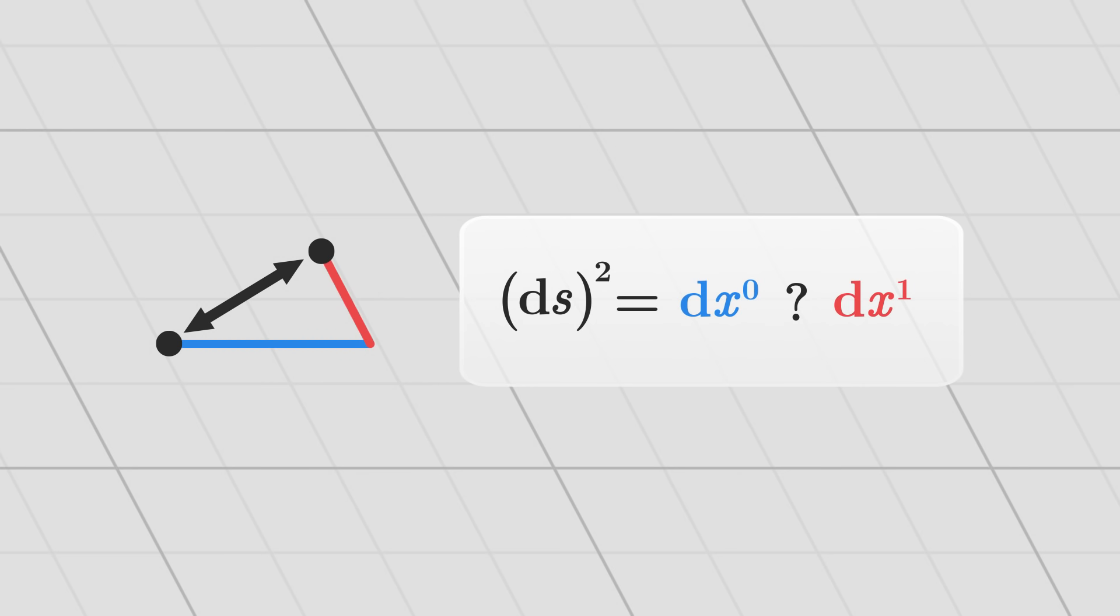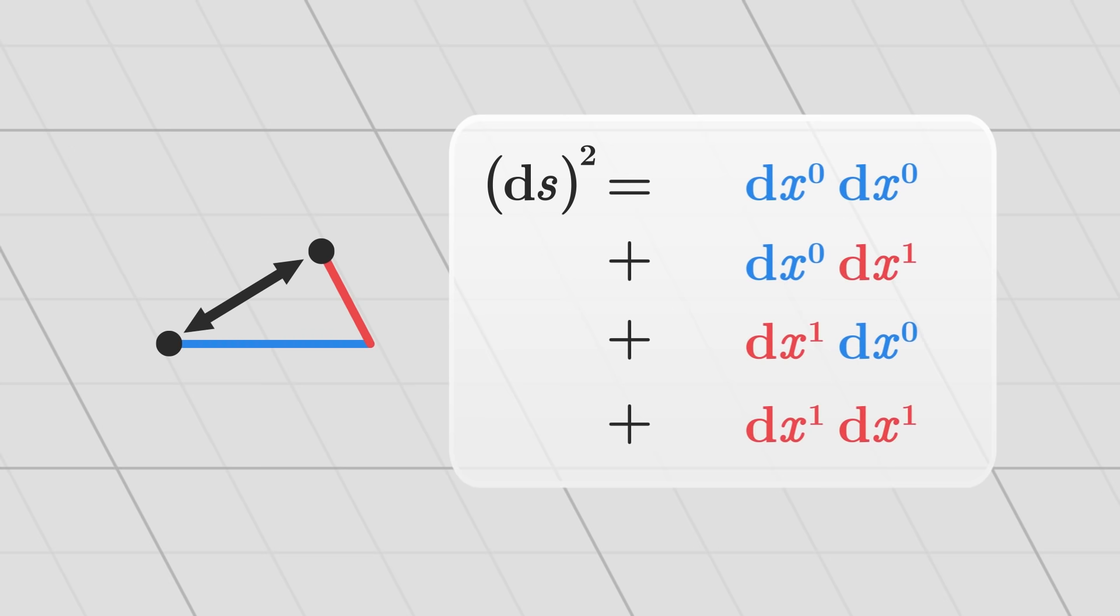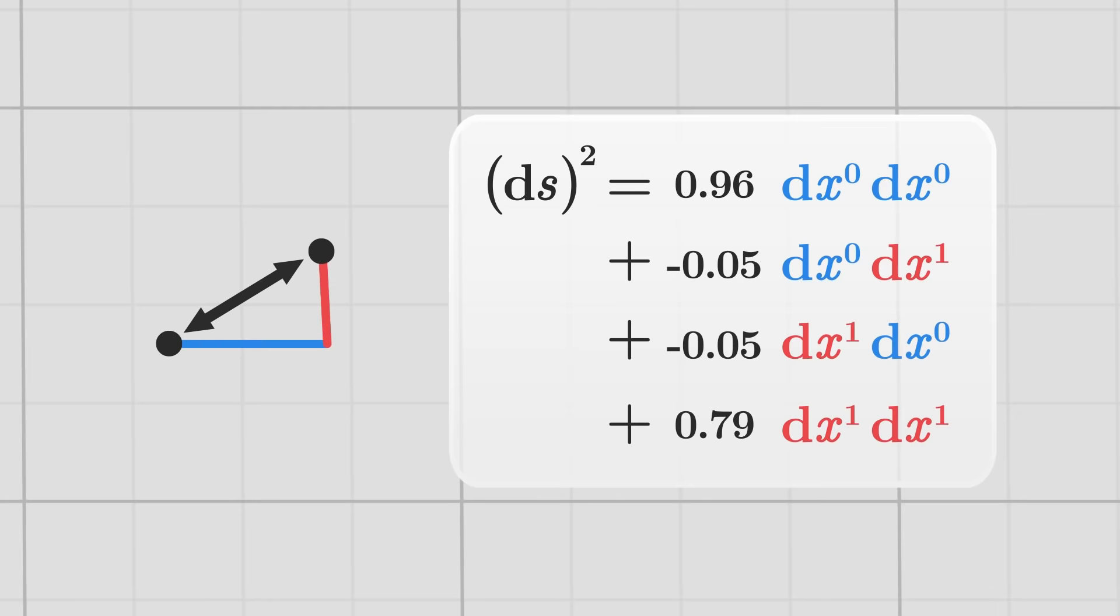Generally, the square of the distance can always be written as a sum of all possible combinations of two sides, multiplied by some numbers. These numbers depend directly on the shape of the grid.